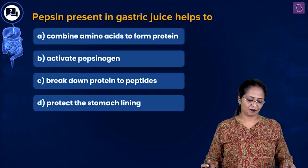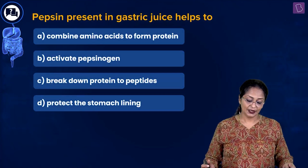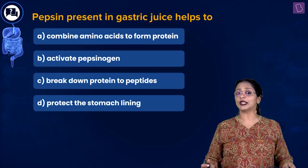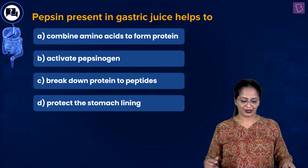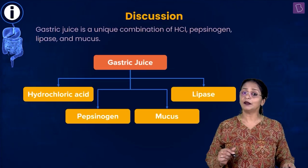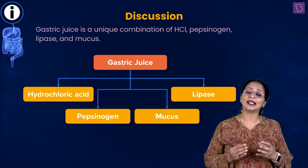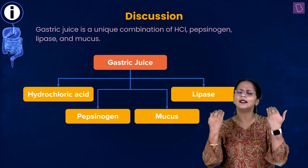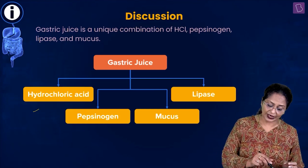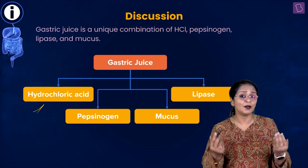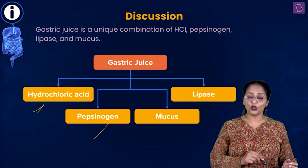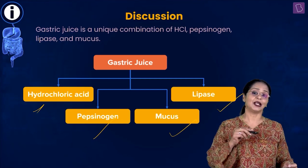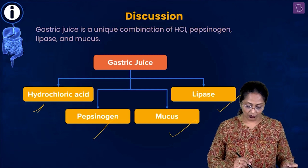A new question: pepsin present in gastric juice helps to A: combine amino acids to form protein, B: activate pepsinogen, C: break down protein to peptides, or D: protect the stomach lining. Pepsin is part of the enzymes found in gastric juice, which is secreted by gastric glands lining the stomach. Gastric juice is made up of HCl, pepsinogen (the inactive form of pepsin), mucus, and lipase.